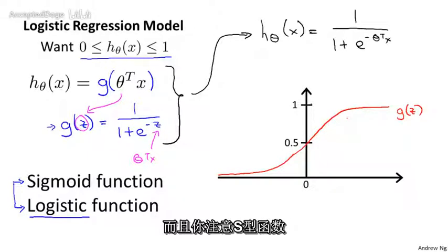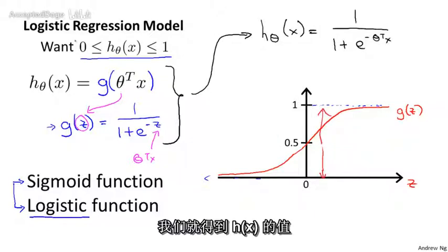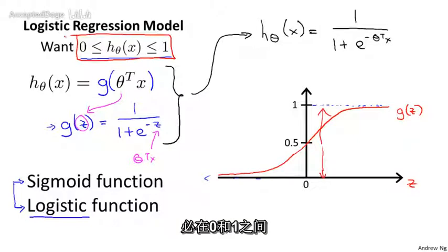And you notice that the sigmoid function asymptotes at 1 and it asymptotes at 0 as z, the horizontal axis of z. As z goes to minus infinity, g of z approaches 0. And as g of z approaches infinity, g of z approaches 1. And so because g of z outputs values that are between 0 and 1, we also have that h of x must be between 0 and 1.